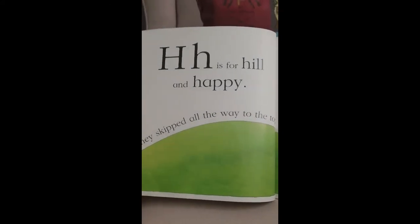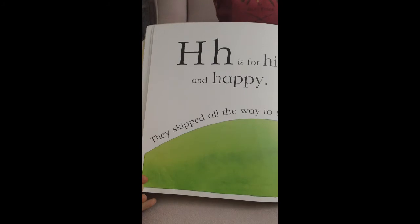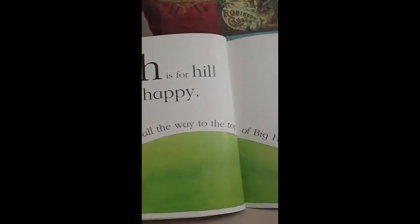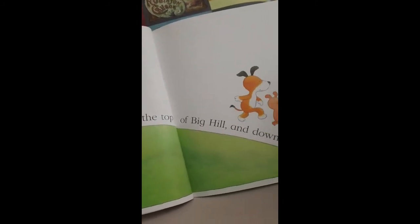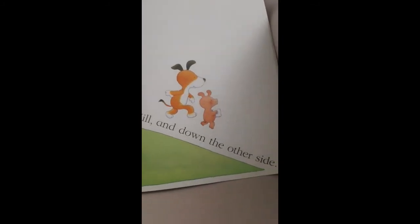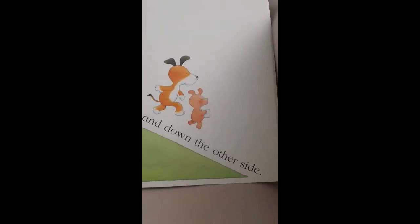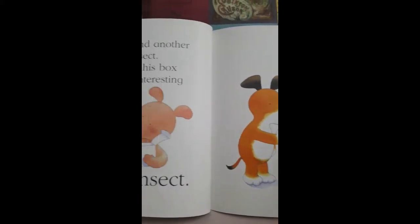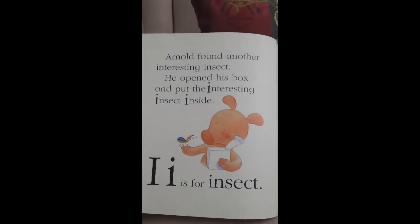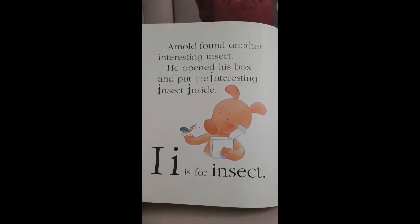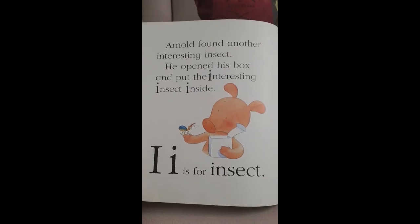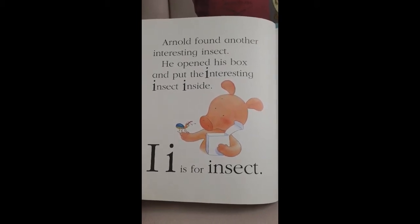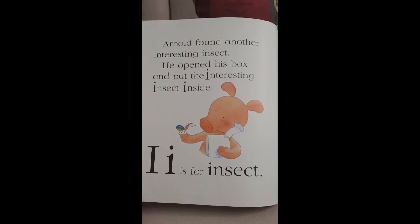H is for Hill and Happy. They skipped all the way to the top of Big Hill and down the other side. Arnold found another interesting insect. He opened his box and put the interesting insect inside. I is for Insect.